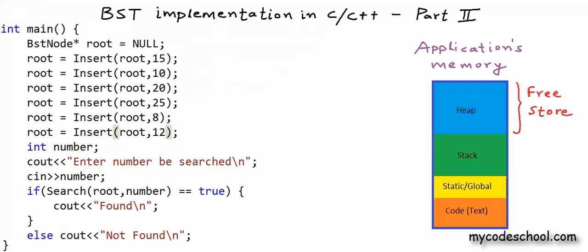The memory allocated to a program for its execution in a typical architecture can be divided into four segments. There is a text segment to store all the instructions in the program — the compiled instructions in machine language. There is another segment to store all the global variables. A variable declared outside all functions is called a global variable and is accessible to all functions.